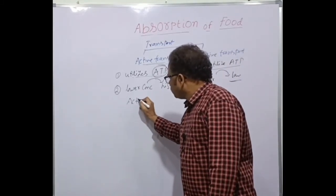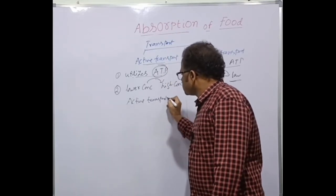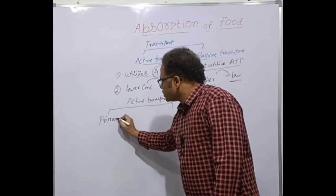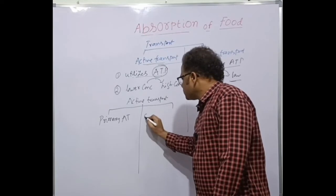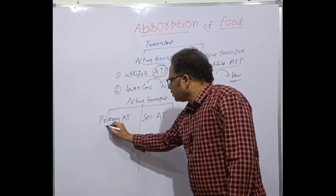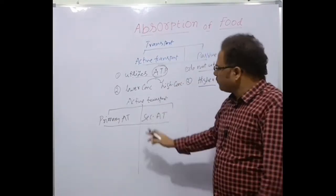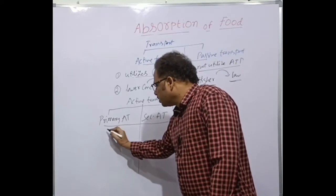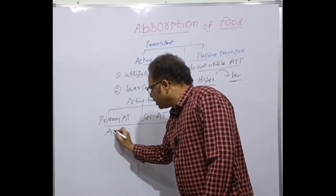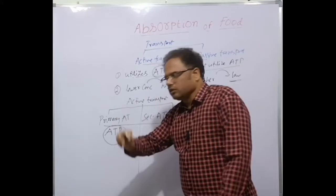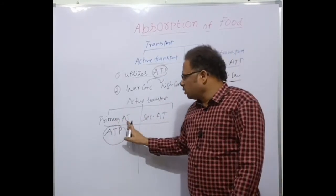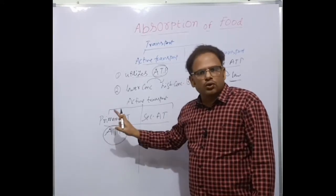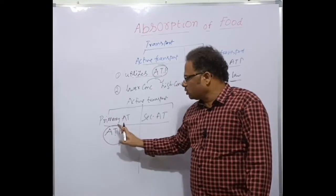Active transport is of mainly two types: primary active transport and secondary active transport. Both utilize energy, but the difference is that in primary active transport, the food particles directly utilize energy in the form of ATP during the transport mechanism. That is called primary active transport.